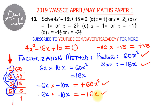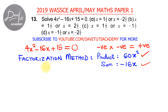Since we found minus 6x and minus 10x, we will now rewrite the equation. Instead of writing minus 16x, we write the sum of these two terms.